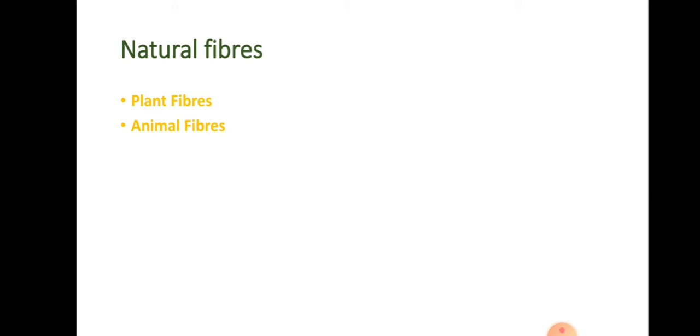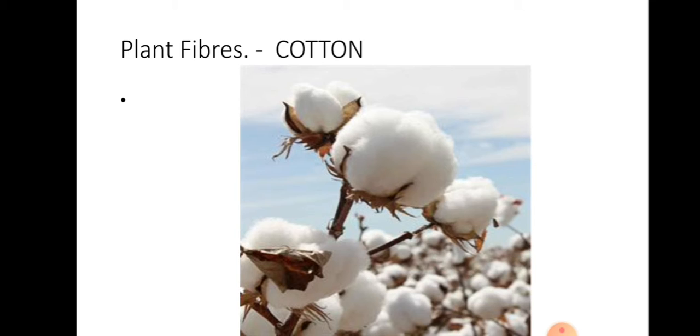For example, plant fibers: cotton, jute. And animal fibers: wool, silk. These are obtained from animals like sheep and cocoon. Next topic, we are going to see about the plant fibers. The two most famous fibers are cotton and jute. This is the cotton plant children. This cotton fiber is obtained from cotton plant.